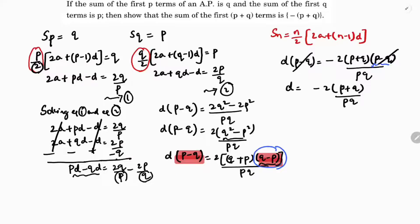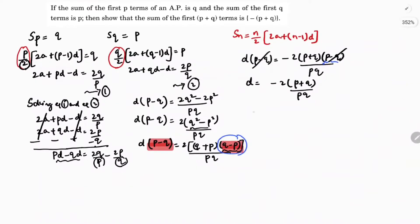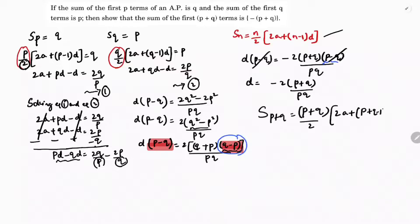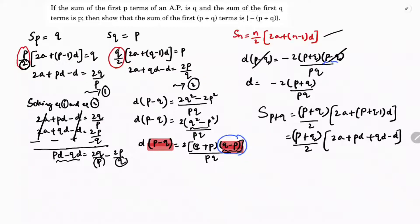Now I need to find S_{P+Q}, the sum of the first P plus Q terms. Using the formula S_N equals N by 2 into 2A plus N minus 1 into D, with N replaced by P plus Q: S_{P+Q} equals P plus Q by 2 into 2A plus P plus Q minus 1 into D, which expands to 2A plus PD plus QD minus D.